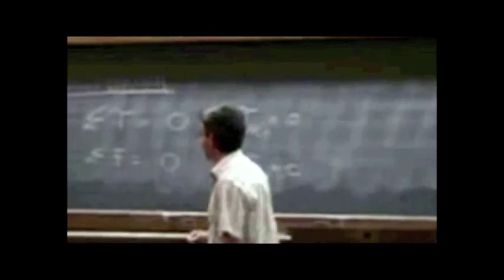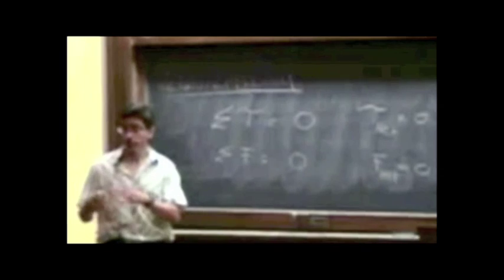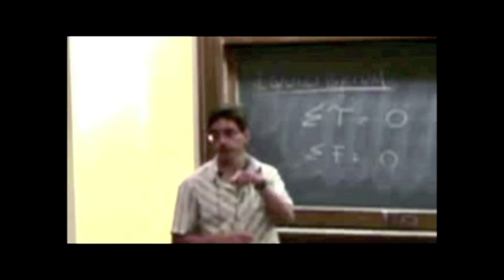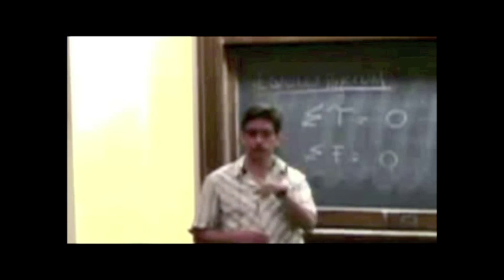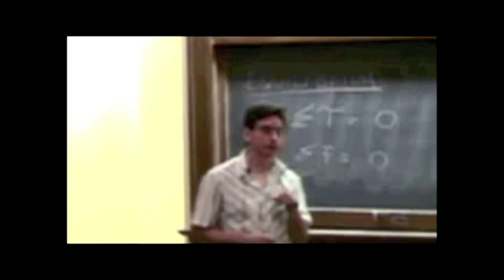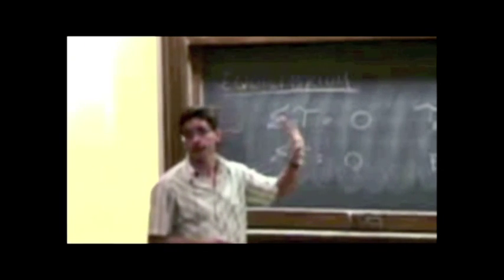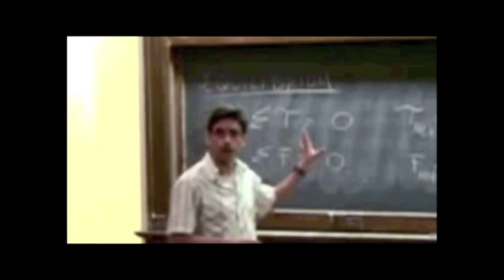There is a case — though we won't do many problems with it — where the sum of the torques is zero but the object might still be spinning. In that case the angular velocity would be constant. We'll talk about that when we write the equation relating torque with angular acceleration. For now let's stick to static equilibrium, where nothing is moving.